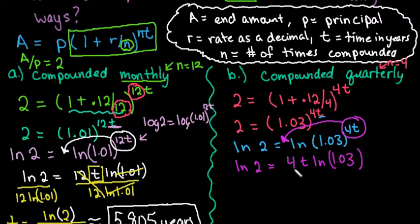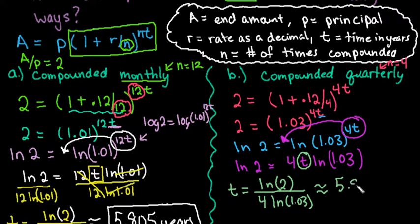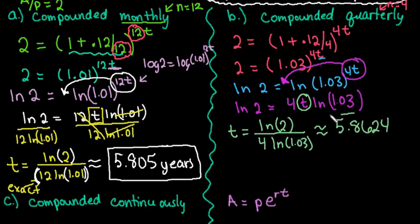With t, I always put a tail on it when I'm solving for a t because otherwise it can look like a plus sign and you can get confused as to what you're actually solving for. Since we're solving for this t, we would divide both sides by the 4 natural log 1.03. So I would do natural log 2 divided by 4 natural log 1.03. You would just plug this into your calculator. I already did it - this ends up being 0.58624. You can see it's not much longer, but it does take a little bit longer when it's compounded quarterly. It will take a little bit longer for it to double.